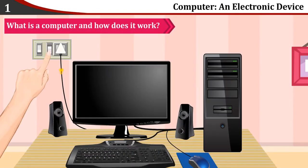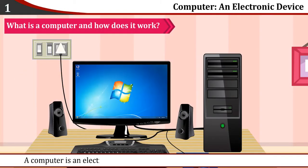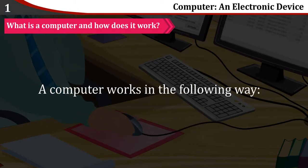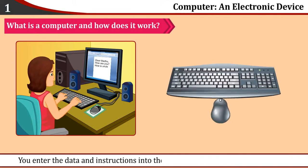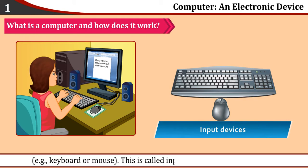What is computer and how does it work? A computer is an electronic machine that takes data and instructions as input, processes the data and gives the result as output. You enter the data and instructions into the computer using the input devices. This is called input.